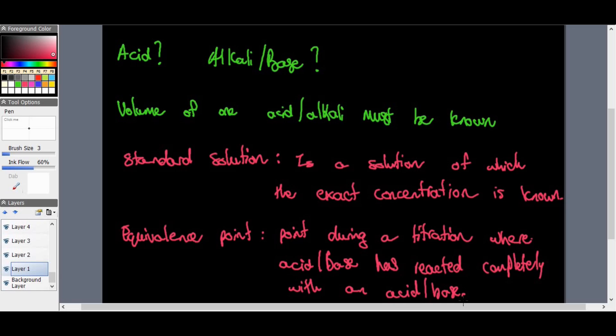There's also the end point — a point during a titration where the indicator changes color. We learned about indicators from Grade 9: if litmus paper changes to red it's an acid, if it changes to blue it's a base. Blue litmus paper changes to red for an acid, and stays blue for an alkali or base.